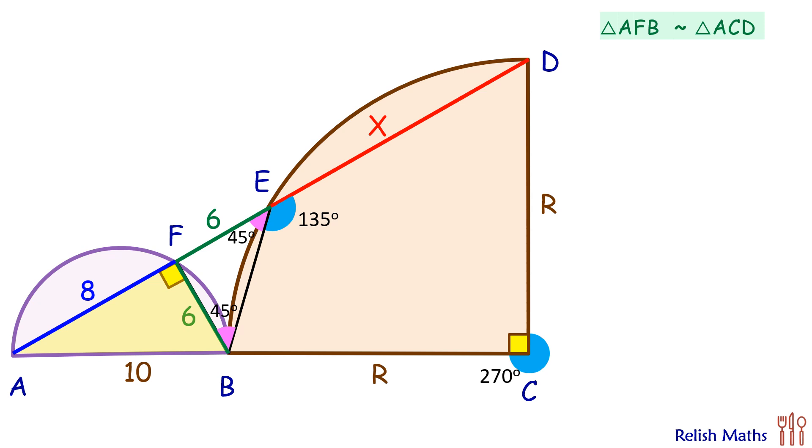Thus the ratio of sides will be equal, or we can say that AF upon FB will be equal to AC upon CD. Putting the values, AF is 8 centimeters, FB is 6 centimeters, AC is 10 plus r, and DC is r centimeters.